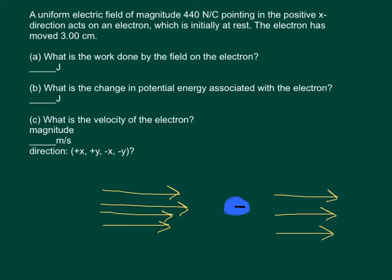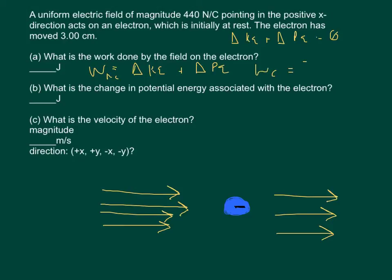The question asks what is the work done by the field on the electron. Work is equal to the change in kinetic energy plus the change in potential energy. This applies when work is done by a non-conservative force. When work is done by a conservative force, the change in kinetic energy plus the change in potential energy equals zero.